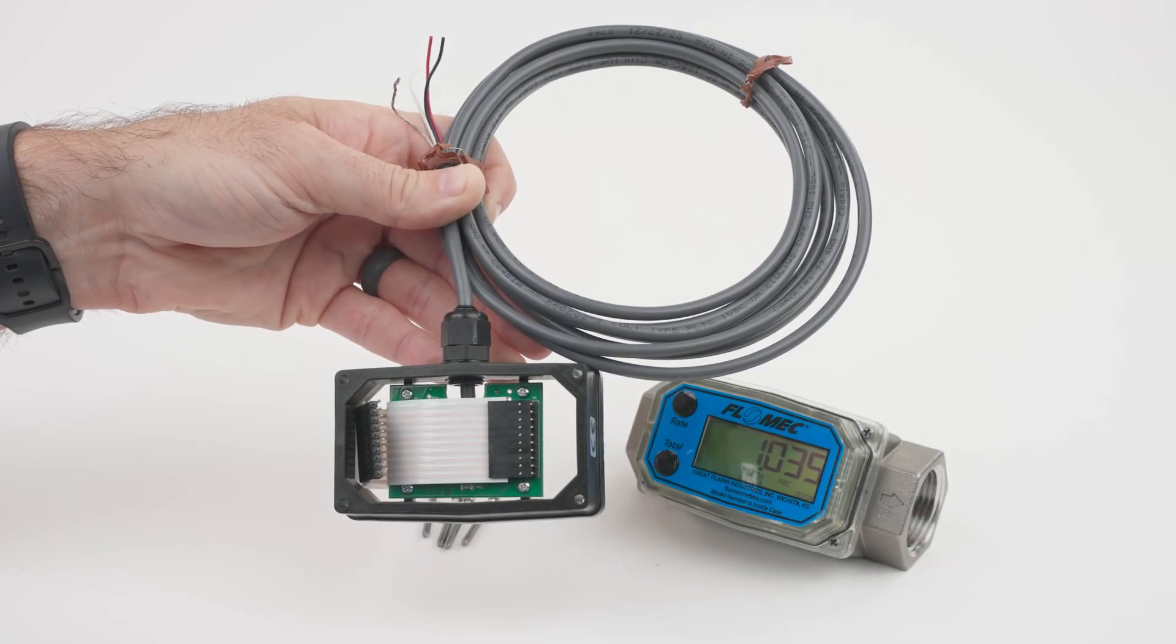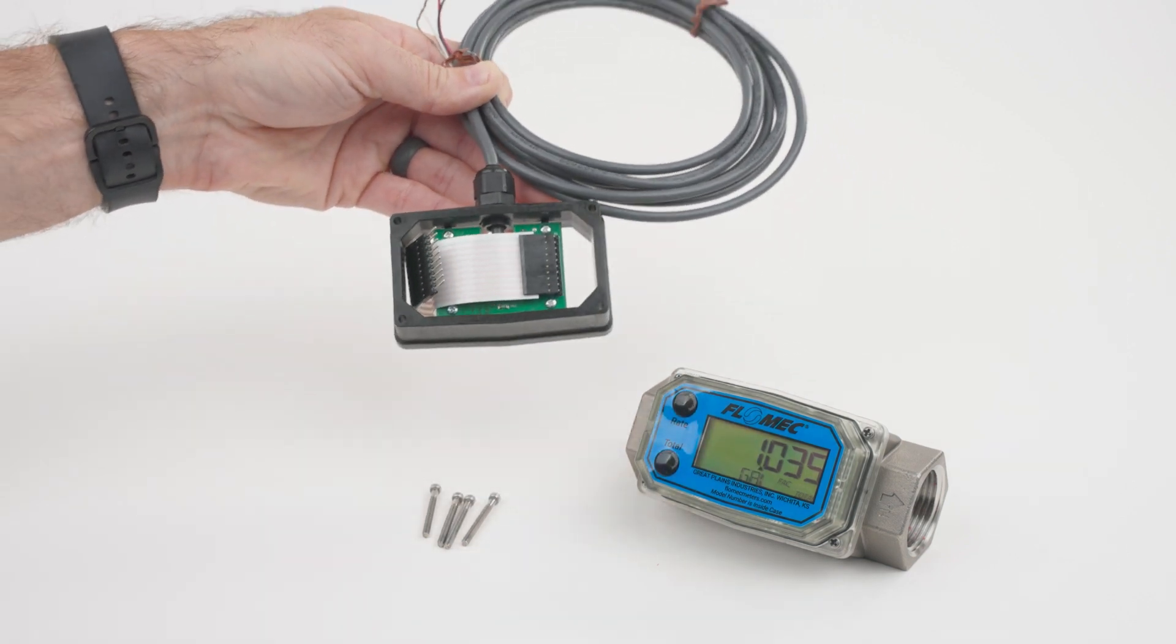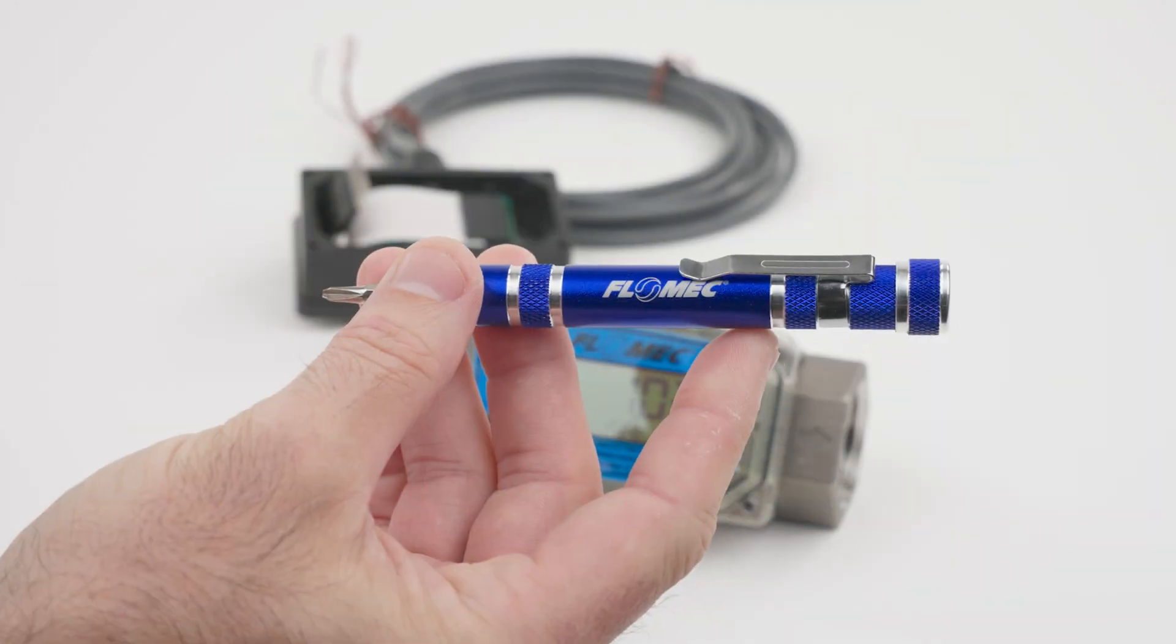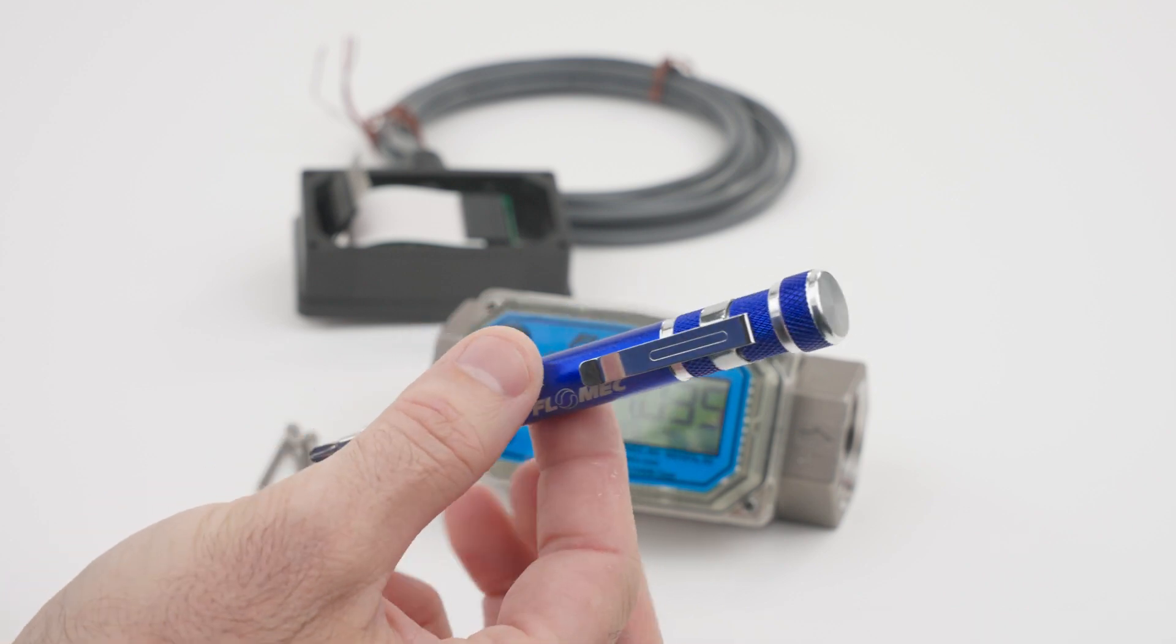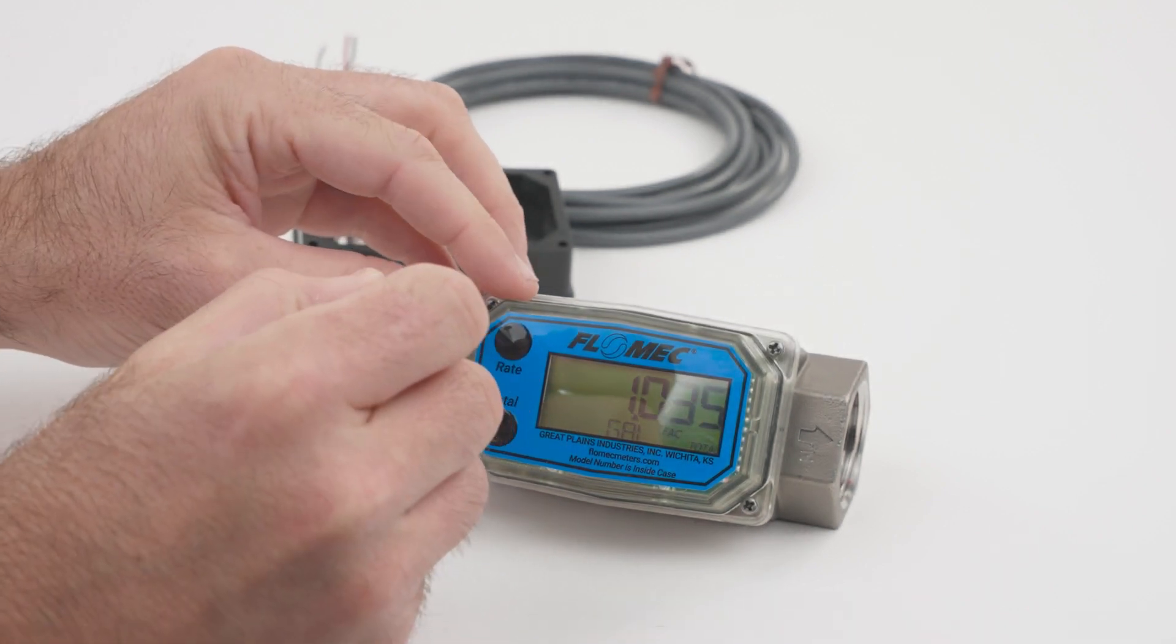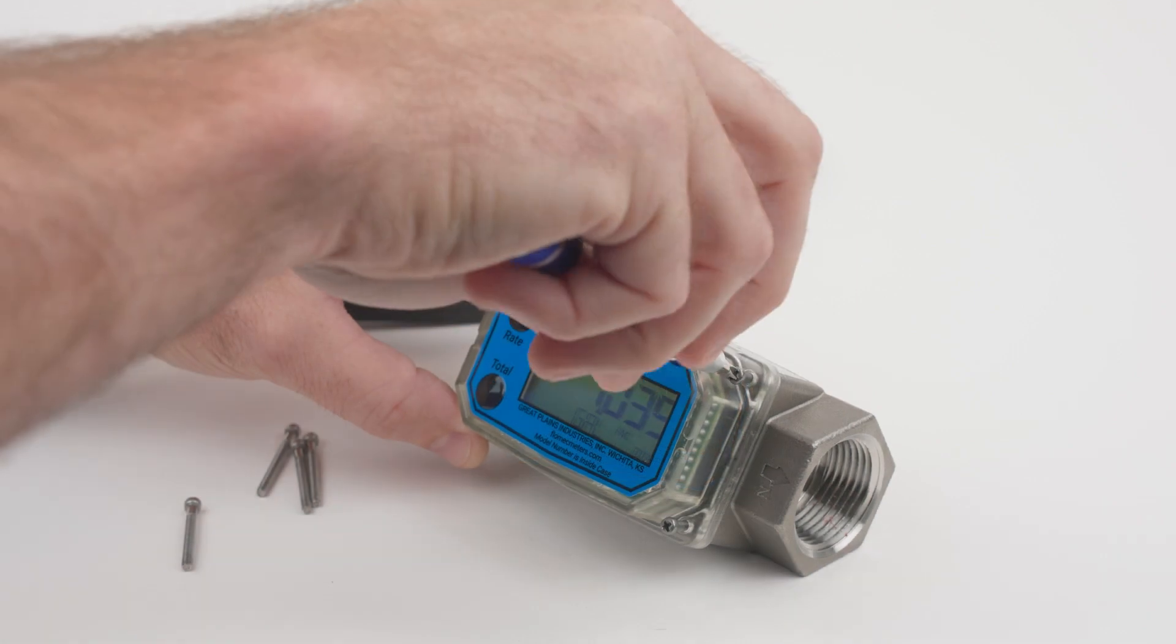To install a 4-220 milliamp module onto your Q9 equipped meter, start by using a number two Phillips head screwdriver to remove the four screws attaching the Q9 display to the meter body.